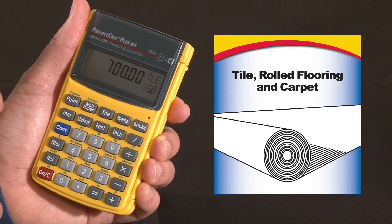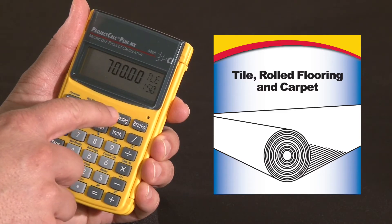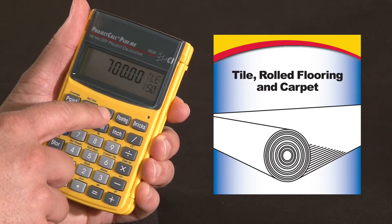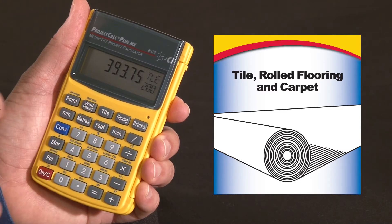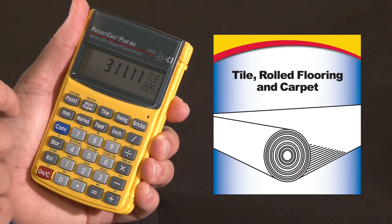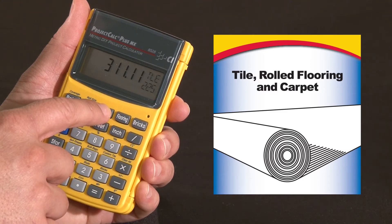So this would require 700 pieces of 150 millimeter by 150 millimeter tile. And you continue pressing tile and it will tell you the different sizes as well as the quantity.